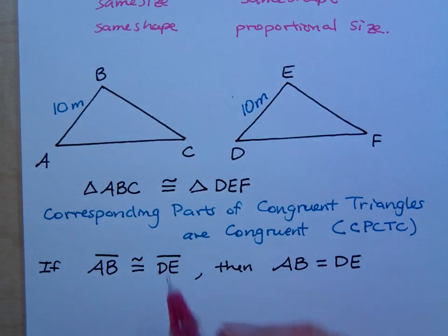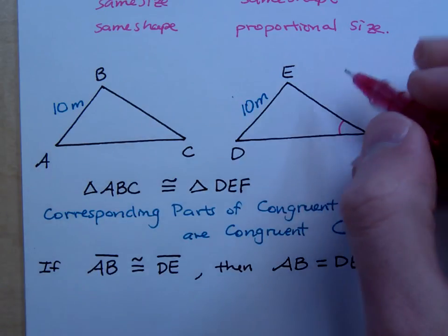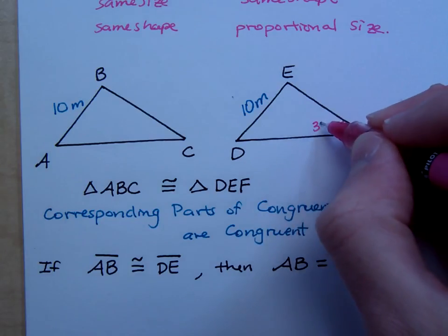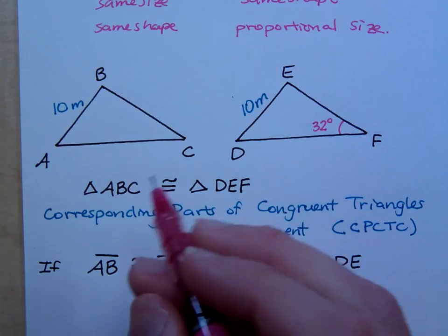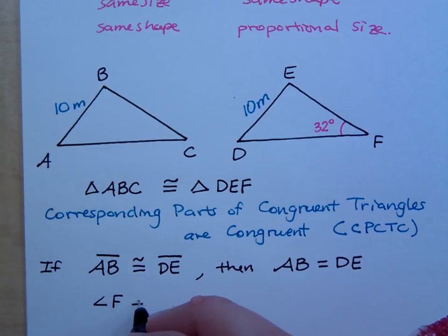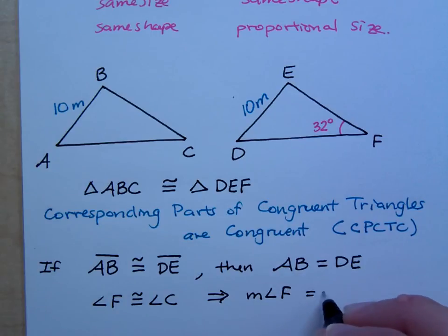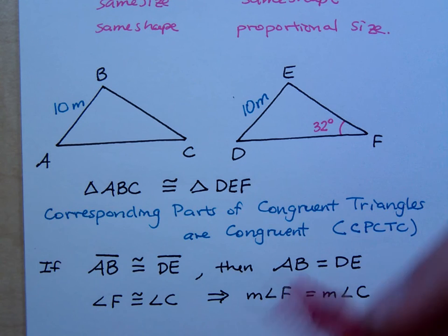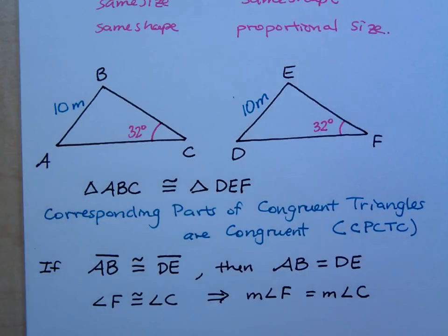What if I say that angle F measures 32 degrees? What else do you know? Right, so in this diagram, angle F is congruent to angle C, which means that the measure of angle F equals the measure of angle C. And you would say, okay, well, this means that guy's going to be 32 degrees. You might even put the same arc there.